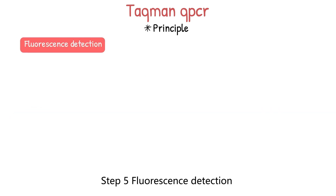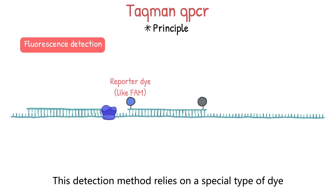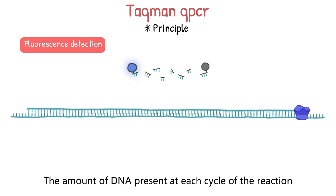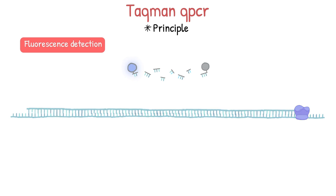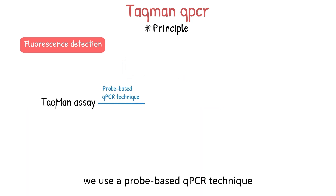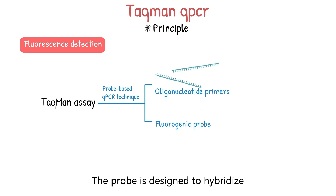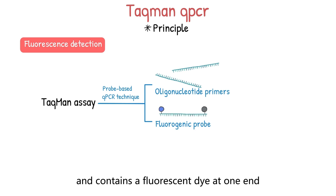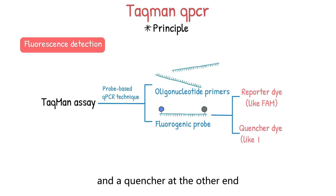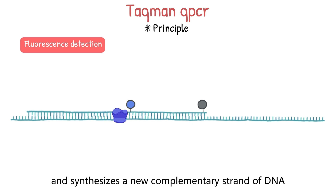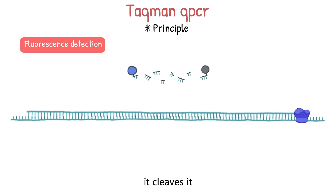Step 5 is fluorescence detection. This detection method relies on a special type of dye that emits light when it binds to the amplified DNA product. The amount of DNA present at each cycle of the reaction can then be measured. In the TaqMan assay, we use a probe-based qPCR technique that involves a pair of oligonucleotide primers and a fluorogenic probe. The probe is designed to hybridize to the target sequence of interest and contains a fluorescent dye at one end and a quencher at the other end. During the PCR reaction, the Taq polymerase extends the primers and synthesizes a new complementary strand of DNA. When the polymerase reaches the probe, it cleaves it, releasing the fluorescent dye from the probe and separating it from the quencher.